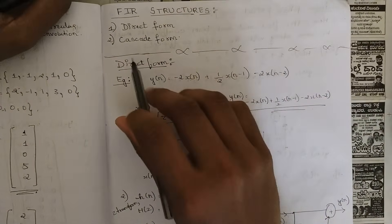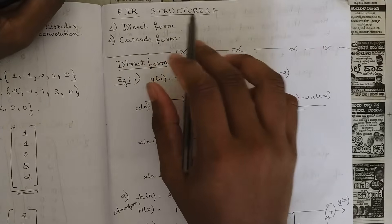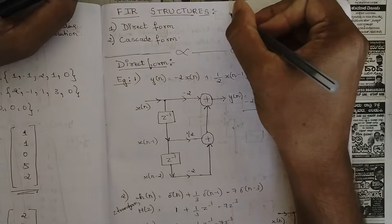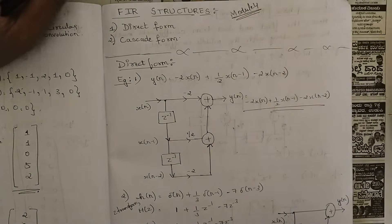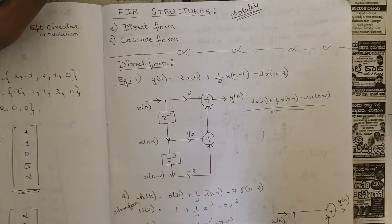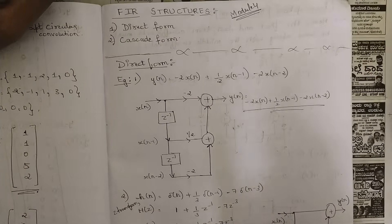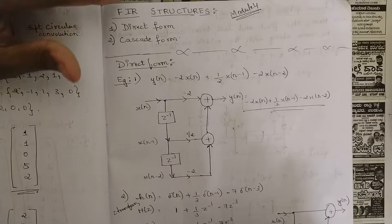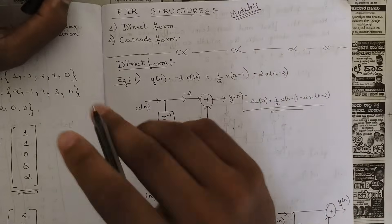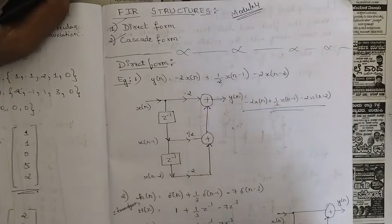The next topic we are covering is related to FIR structures, which is from module 4. I'm not going module-wise; I'm taking one concept at a time that is necessary and covering them in sequence. Today we are discussing FIR structures, and in FIR structures we have two kinds of forms: one is direct form and one is cascaded form.